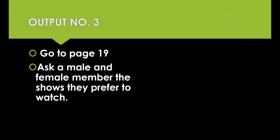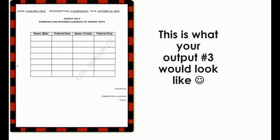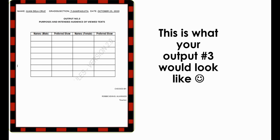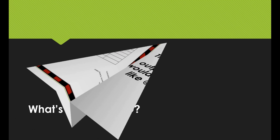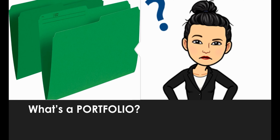For your output number 3, go to page 19, Additional Activity. You're going to ask the members of your family and list down the shows, programs, and videos that they prefer to watch using the template given. Transfer your template to a long bond paper. This is what your third output would look like. Don't forget to color, put a design on your output, and observe neatness and cleanliness. Afterwards, put your output in your portfolio — a long folder that holds all your outputs for the school year. Put it in a long green folder and submit it together with your activity notebook on the next scheduled routine.